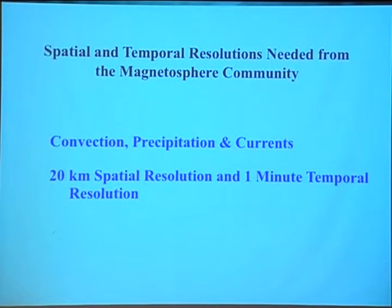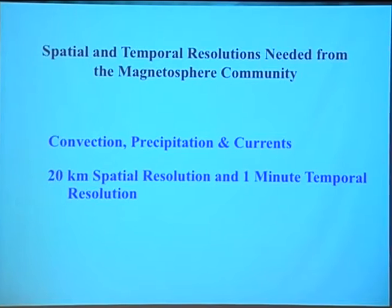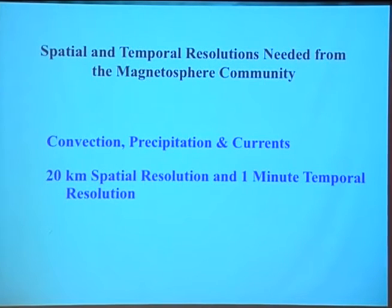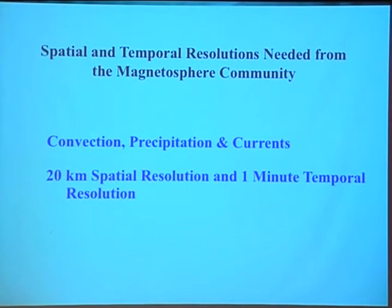So what do we need from magnetospheric physicists? For convection, precipitation, and currents, we need models or measurements that give 20-kilometer spatial resolution horizontally and a one-minute timescale. This is a nice challenge for young people — making measurements or developing models to reach this level.